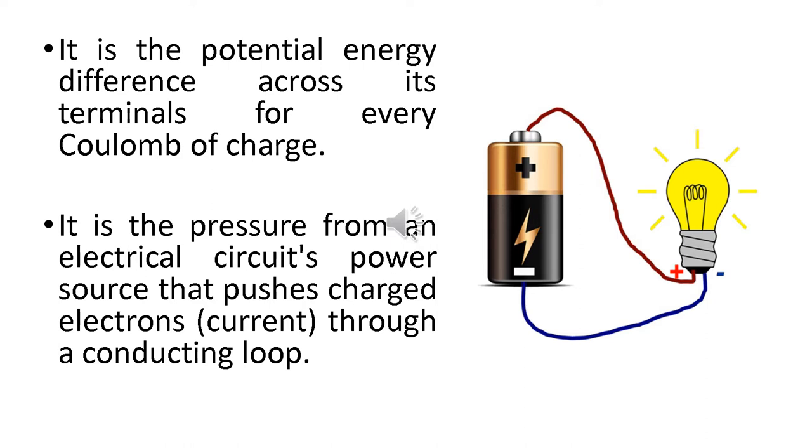It is the potential energy difference across its terminals for every coulomb of charge. It is the pressure from an electrical circuit's power source that pushes charged electrons, or current, through a conducting loop. As I said, this battery is the potential difference or the power source. Now the job of this voltage source is to push the electrons so they flow. The purpose or role of this voltage source is to push the electrons so they move, and that movement is what we call current.